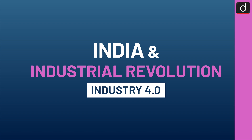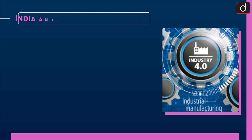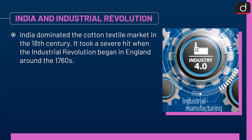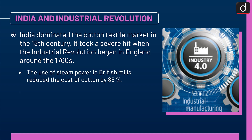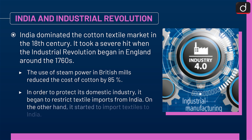Now let's discuss India and the Industrial Revolution. India dominated the cotton textile market in the 18th century. It took a severe hit when the Industrial Revolution began in England around the 1760s. The use of steam power in British mills reduced the cost of cotton by 85%. In order to protect its domestic industry, Britain began to restrict textile imports from India.